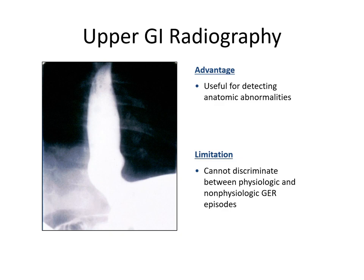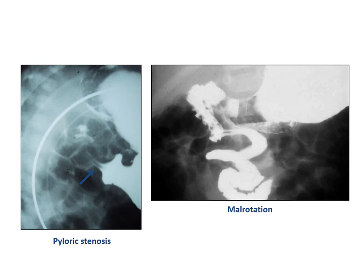Upper GI radiology — barium swallow — gives an idea about the anatomy of the esophagus and the stomach. Unfortunately, it will not discriminate between physiological and pathological reflux episodes, since physiological reflux will not contribute to the patient's complaint, and GI radiography will not differentiate between those episodes and a real reflux episode.